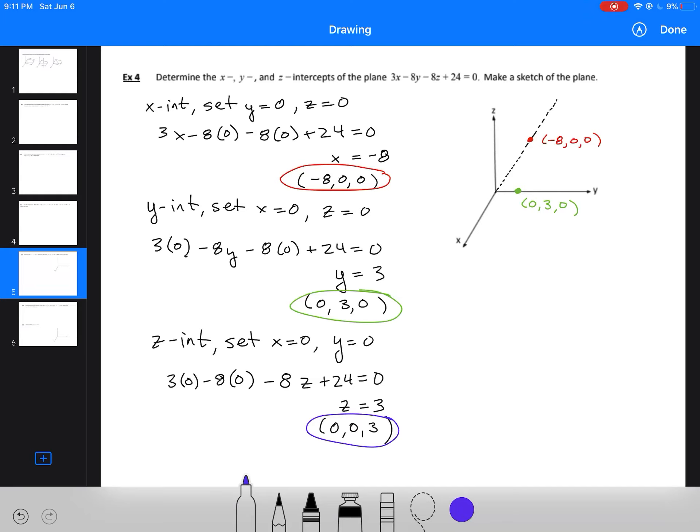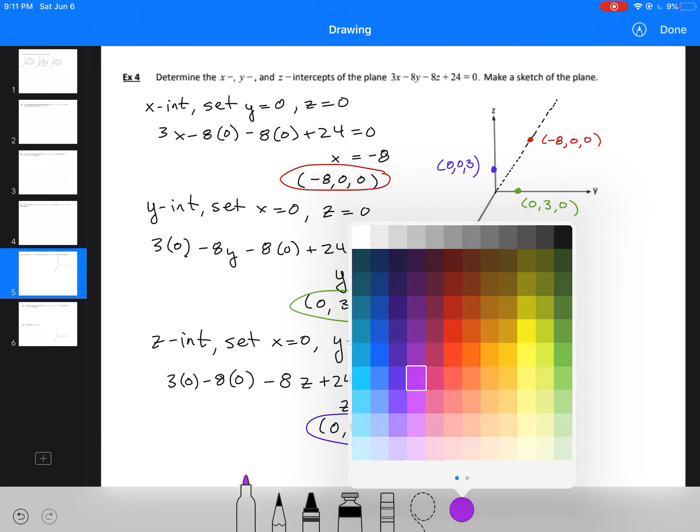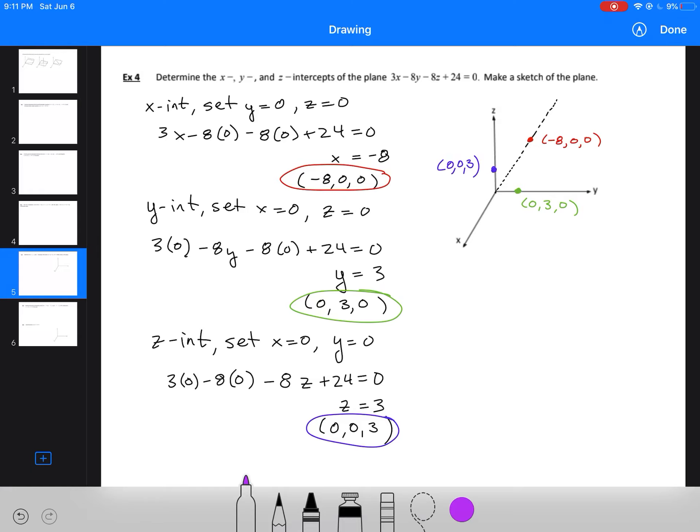That's on the positive z-axis, about here. Probably should be a little bit closer if my scale is the same. There, that's better. (0, 0, 3). Then I'll draw a triangle that connects those three points. I'll do that in purple. Here, here, and here. Then I'll shade it in. This represents that it continues indefinitely in all directions along that plane.